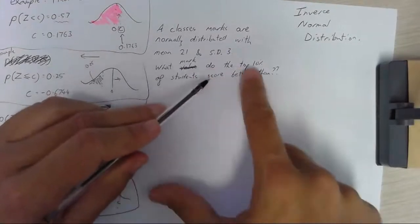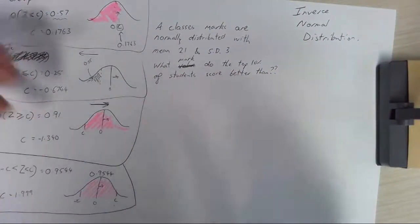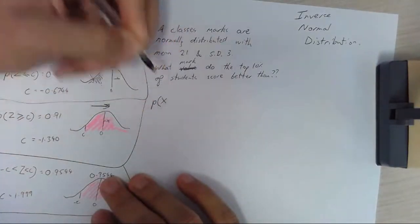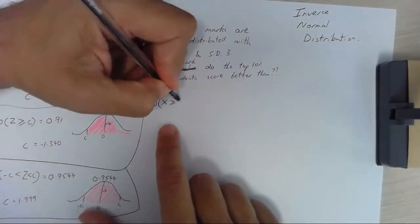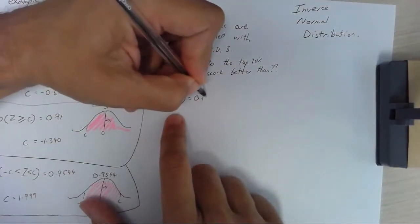What mark do the top 10 percent of students score better than? Okay so we're looking for the probability that x is greater than or equal to c is equal to 0.1.